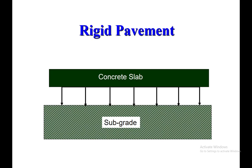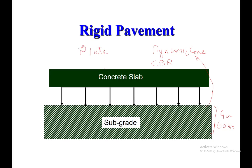As you can see here, in rigid pavement we have a concrete slab above and a subgrade below. The subgrade provision depends on conditions — sometimes we may or may not provide it. The subbase is typically around 40 to 60 millimeters in size, depending on the conditions. Whether to provide it is determined by tests such as the Dynamic Cone Penetrometer (DCP) test, California Bearing Ratio (CBR), plate load tests, and triaxial compression tests.